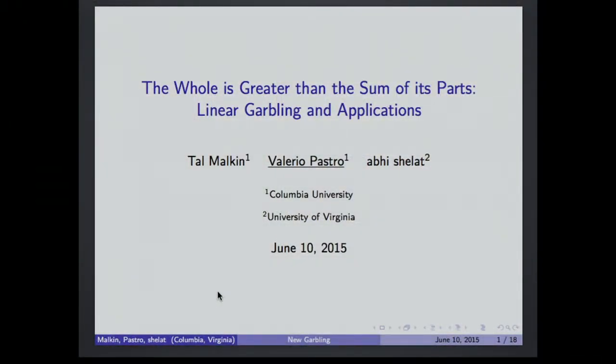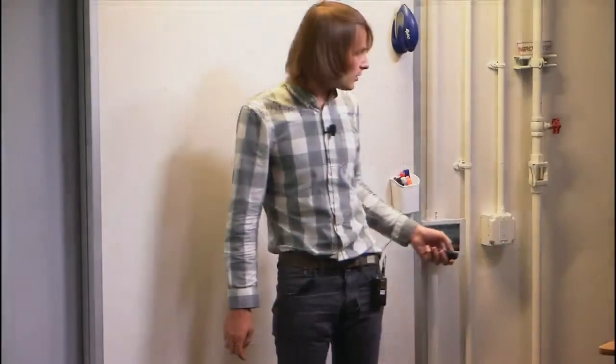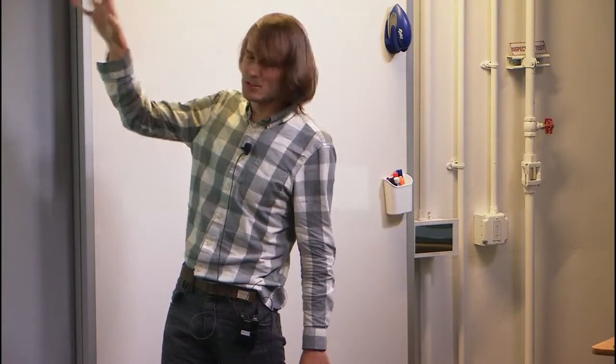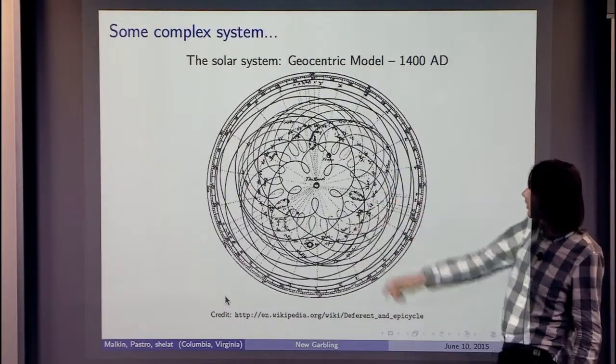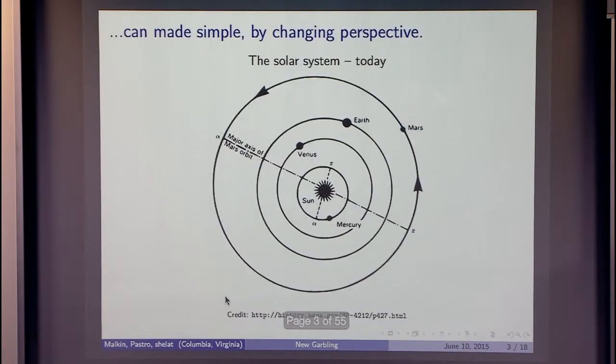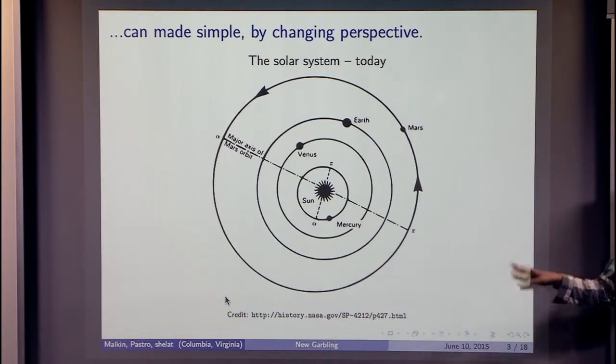So it's a long title, and essentially, it's going to be a new perspective on garbling. I'm starting with a motivational picture. This is the geocentric model for the solar system. You can see the Earth in the middle. The sun rotates around, and some planets do these funky orbits. It's a complicated system. But if you change perspective, it looks pretty clean. We're going to do the same for garbling.